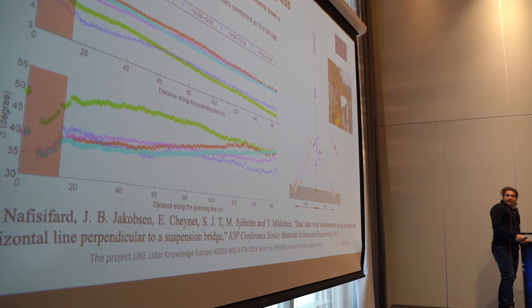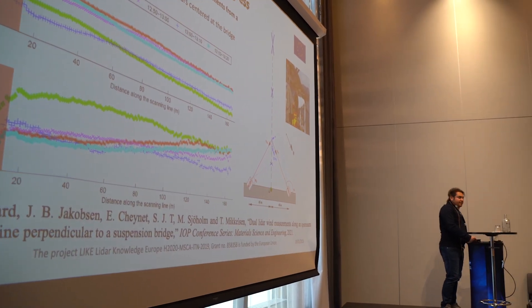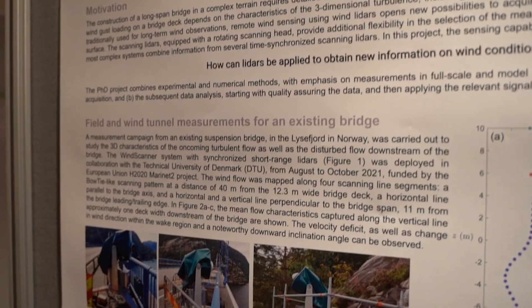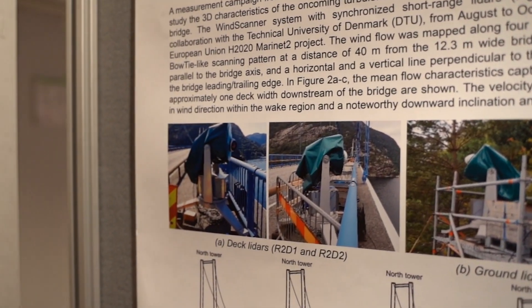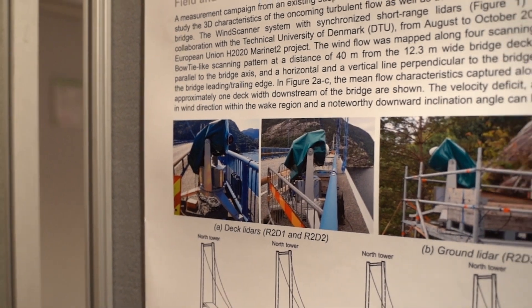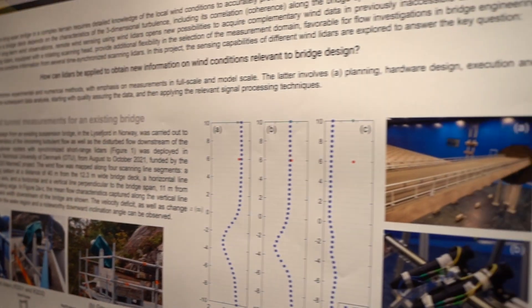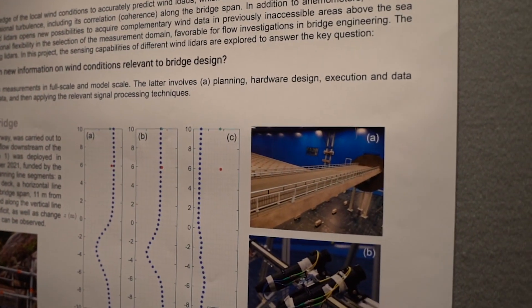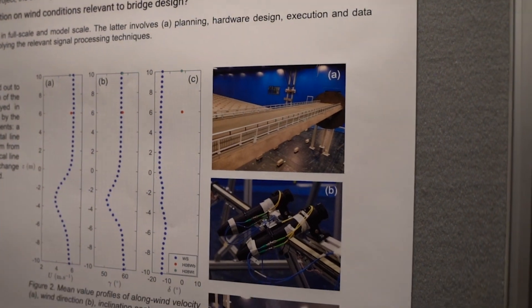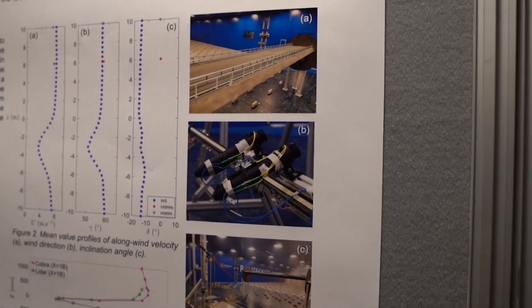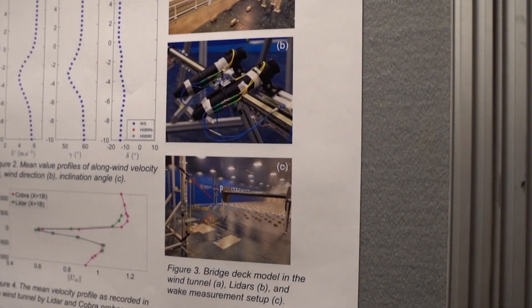Traditionally, the measurements of the wind for bridge engineering applications are done by sonic anemometers. The sonic anemometers measure the wind field, but the wind field itself is distorted because of the mass of the sonic anemometer. Also, we need many sonic anemometers to characterize the wind field, which is quite expensive.